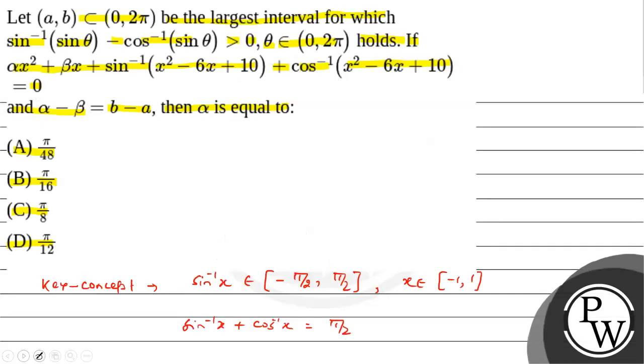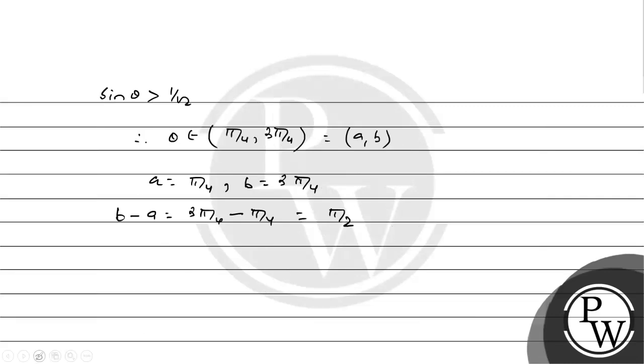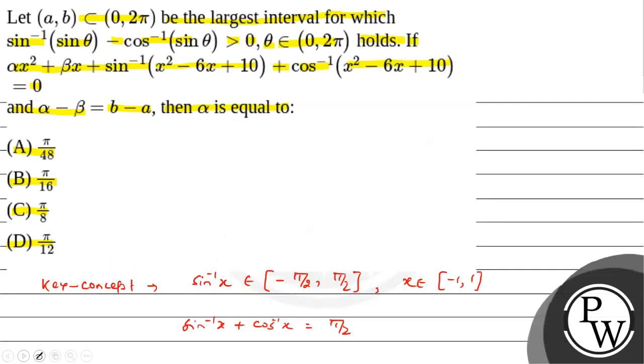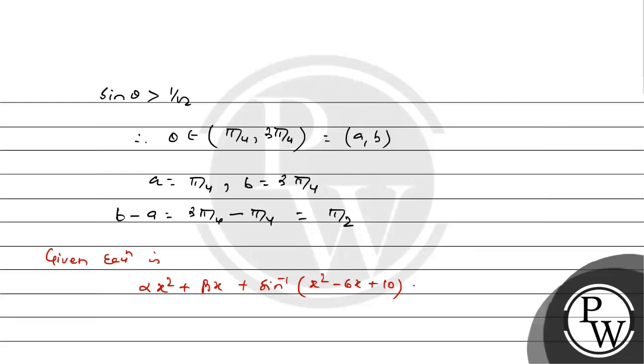Now the equation is αx² + βx + sin⁻¹(x² - 6x + 10) + cos⁻¹(x² - 6x + 10) and this equals 0.